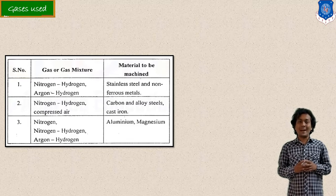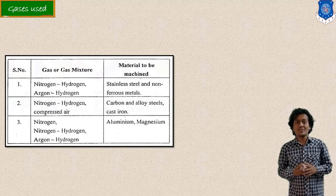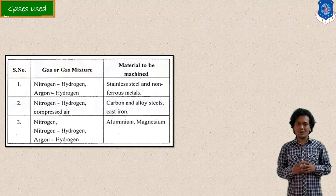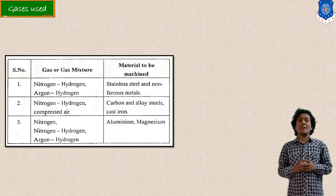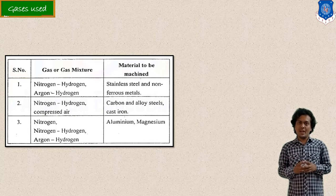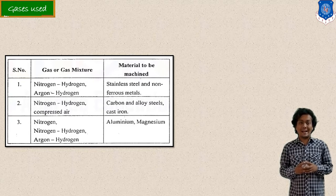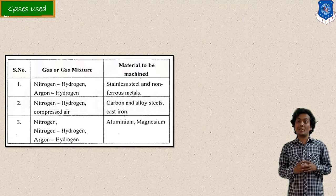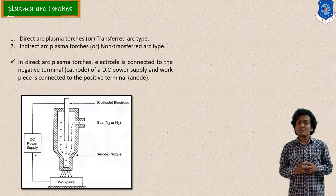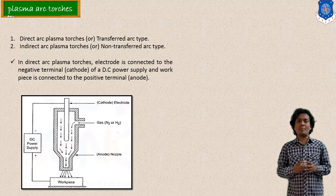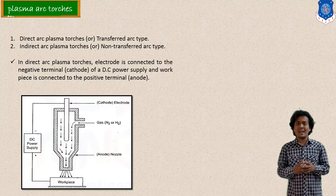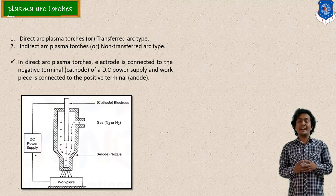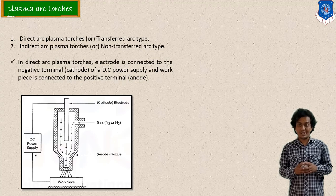Various gases can be provided in this setup. Generally, hydrogen, nitrogen, or a mixture of inert gases can be used. Argon and hydrogen mixture can be used for the machining of steel workpieces. There are generally two types of methods or torches used in plasma arc machining — that is the direct or transferred arc type, and the indirect or non-transferred arc type.